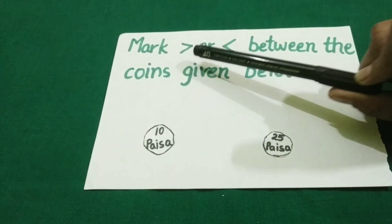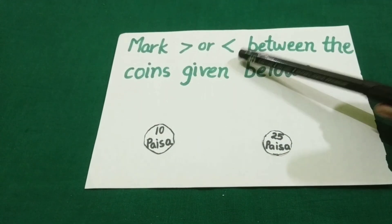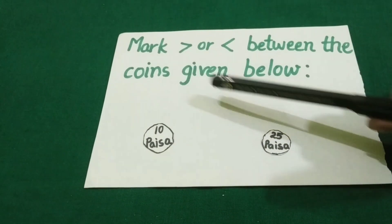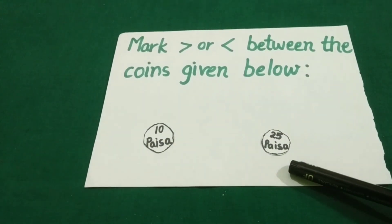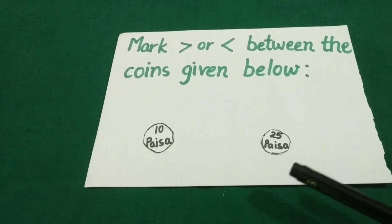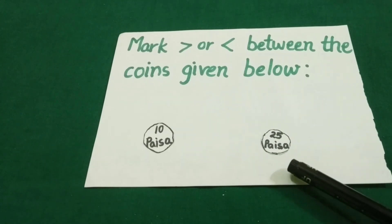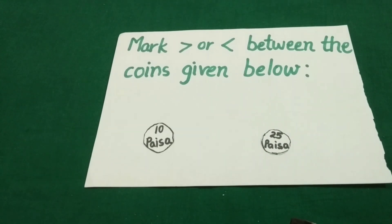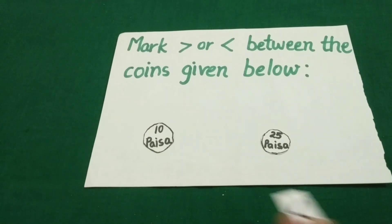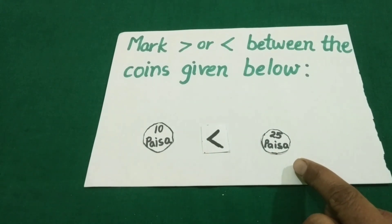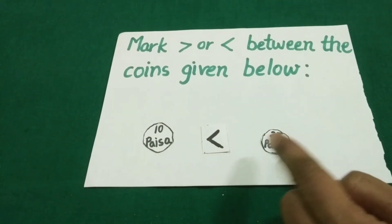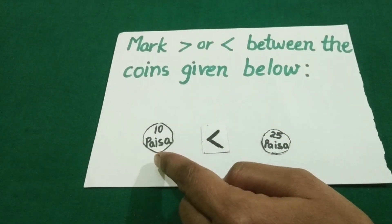Mark greater than or less than between the coins given below. Here, two coins are given — one coin is of 10 Pasa and the second coin is of 25 Pasa. Now students, tell me, value of which coin is greater? Very good. Value of the 25 Pasa coin is greater than the value of a 10 Pasa coin.